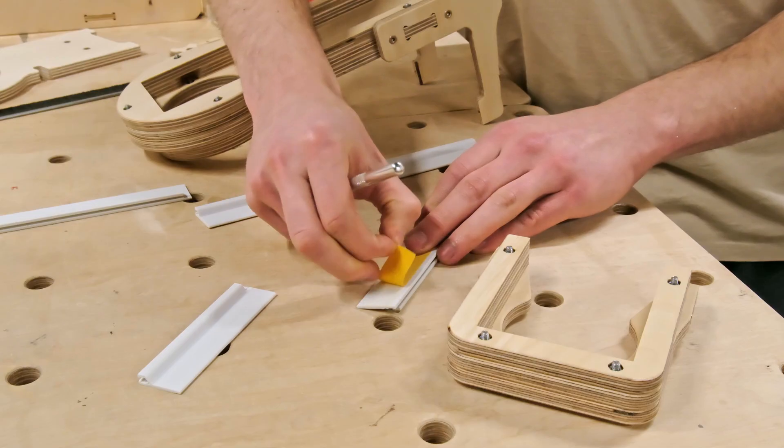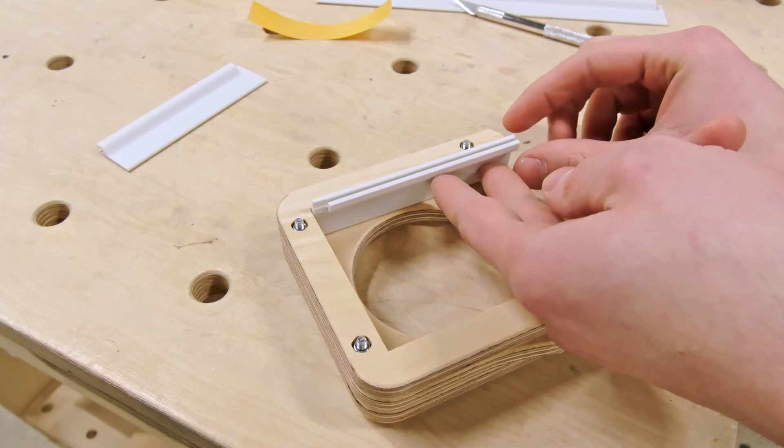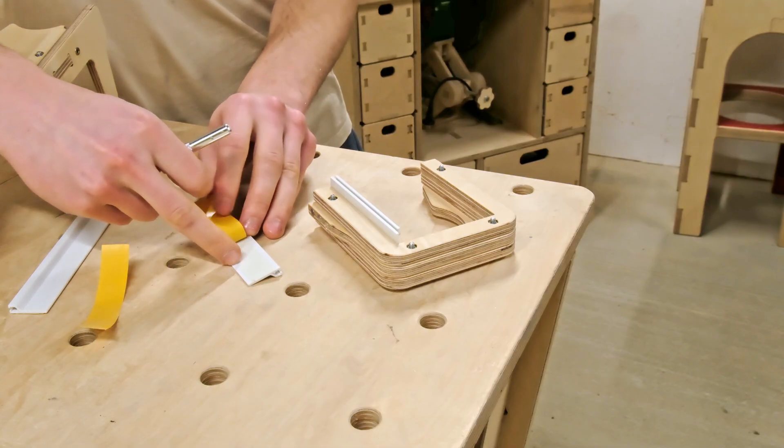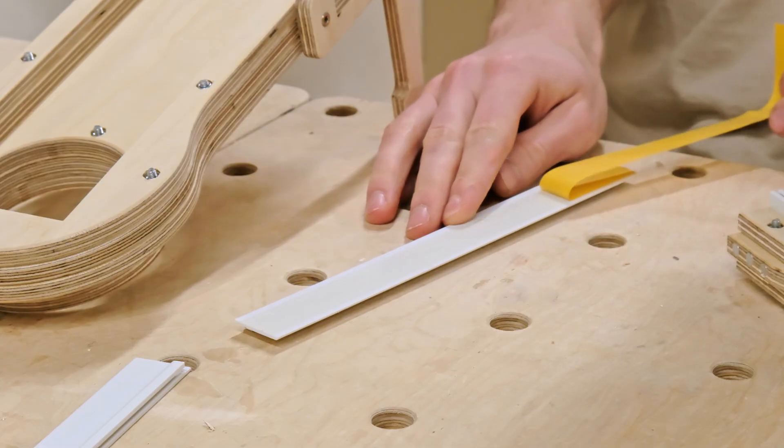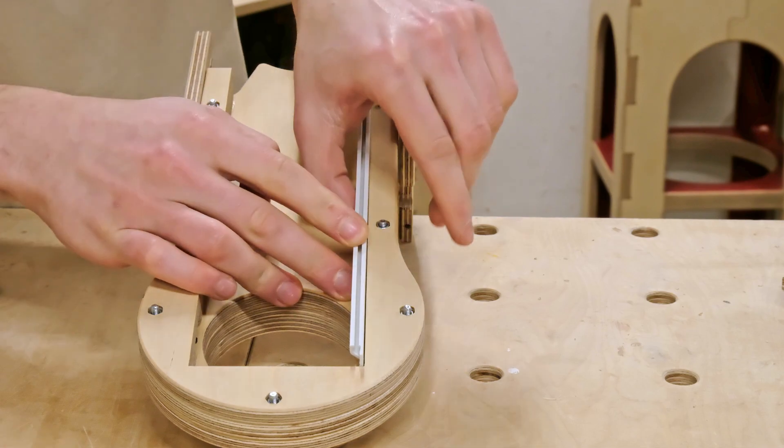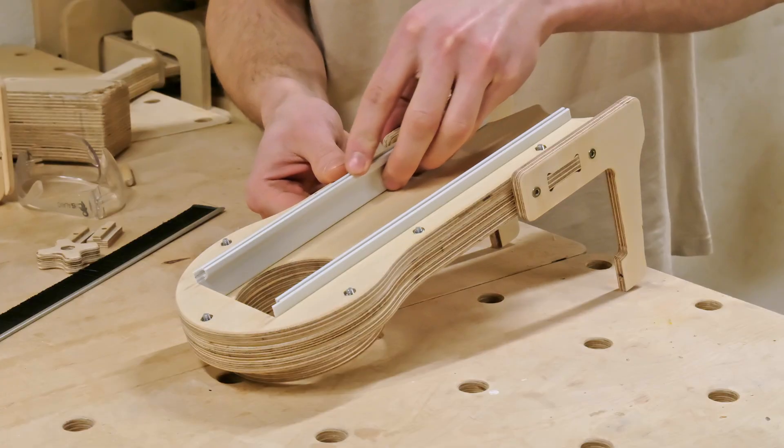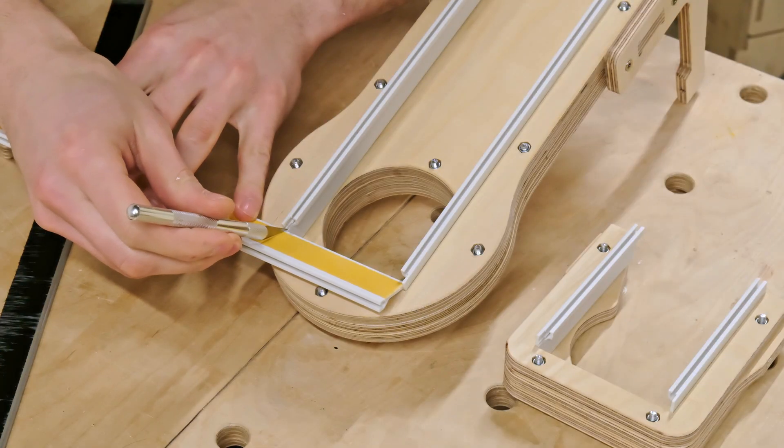Now we can carefully glue the side profiles to the dust shoe components. All we have to do is remove the glue strip seal and gently push the profiles into their correct positions.